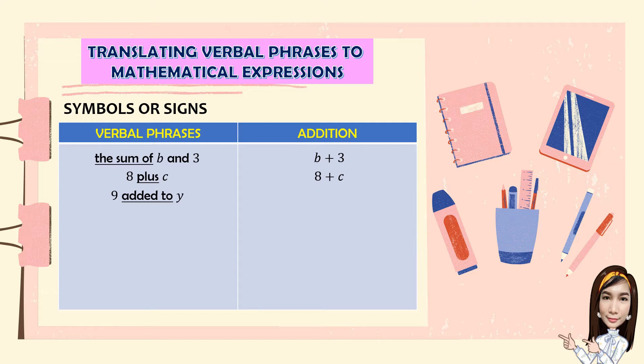Take note, in using the word added to, we're going to start on the right going to the left. So, we're going to write Y first before 9. 5 more than A, same as added to, we're going to start from right going to the left. So, A first plus 5.